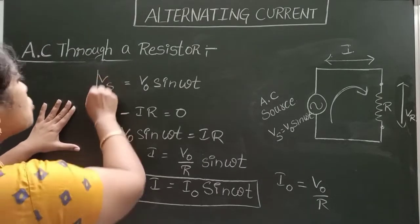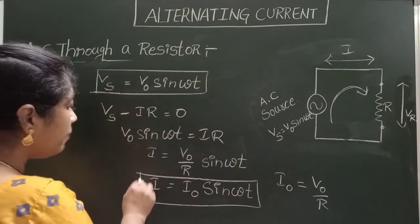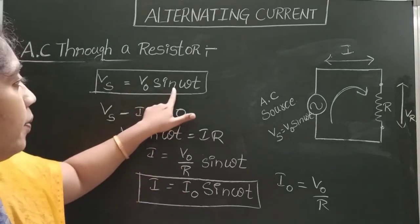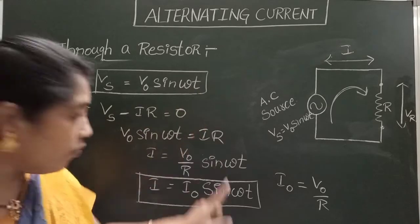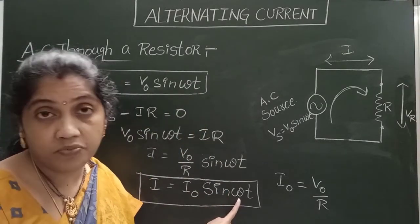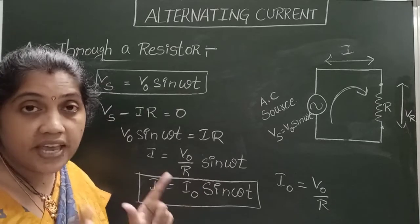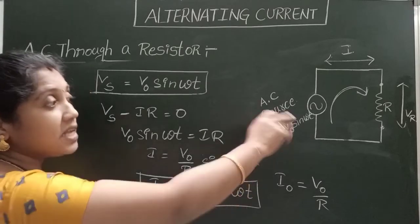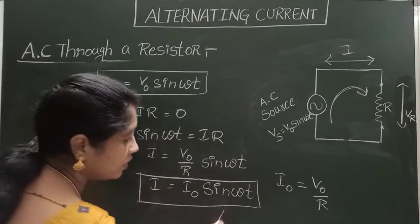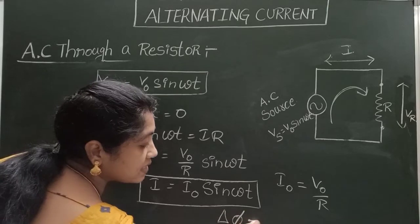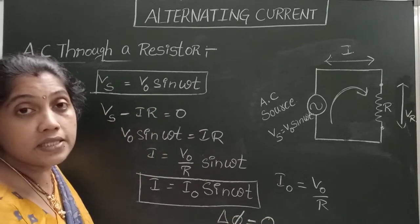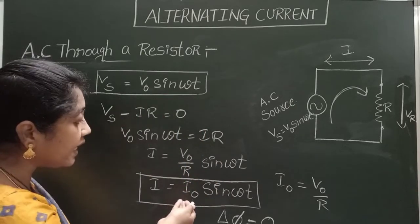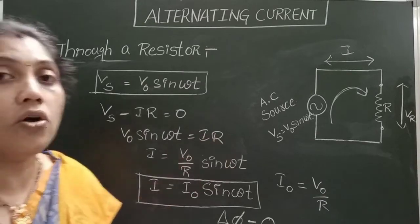Now observe these two equations for alternating EMF and alternating current. The phase angle in both is ωt. The phase difference between alternating current and alternating EMF in a pure resistive circuit is zero — there is no phase difference between them.